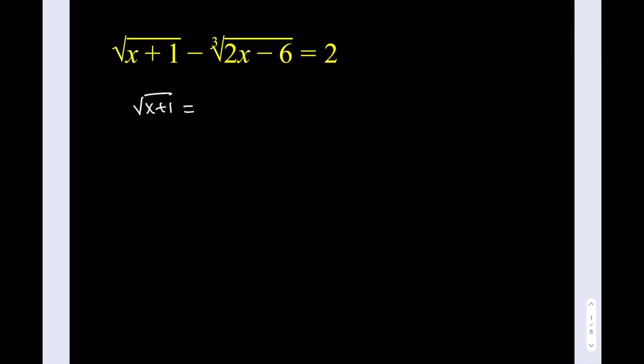One of the things we can do is isolate the square root. So let's go ahead and do that. It's going to give us the square root of x plus 1 equals the cube root of 2x minus 6 plus 2, and then we can square both sides.